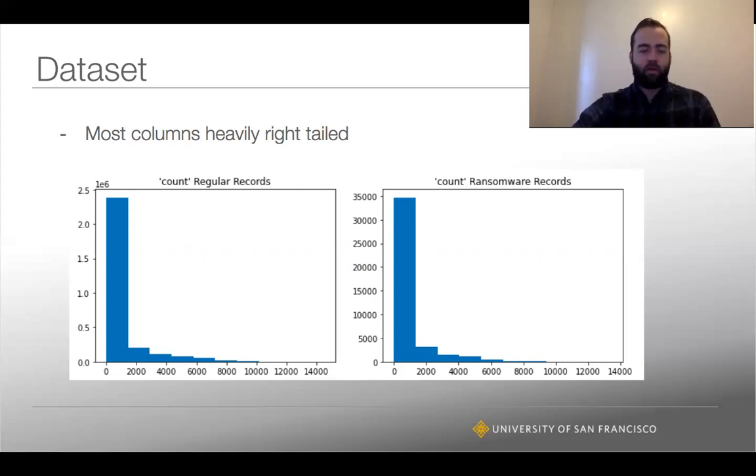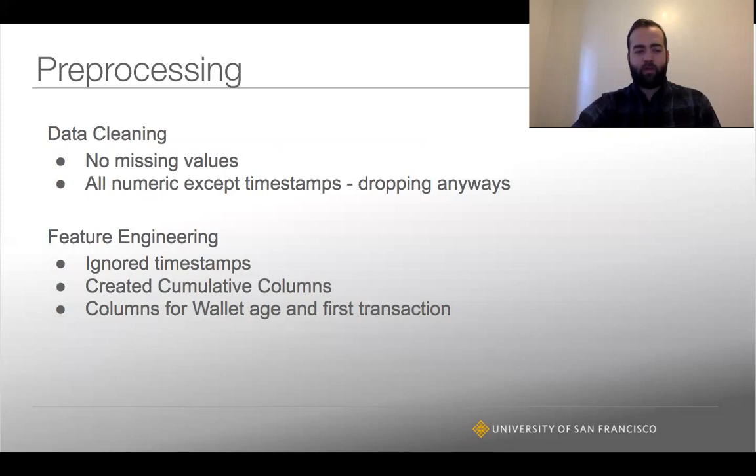The data itself comes from UCI, so it's fairly clean. There's no missing values, which is great. Almost all the columns are numeric except for the timestamp data, which we're going to drop to avoid data leakage. It's only based off of three actual ransomware type attacks, so they didn't happen throughout 2009-2018. If we left in timestamp data, that would be data leakage - we'd predict anything from 2010 isn't ransomware, and that's not helpful to identify ransomware tomorrow.